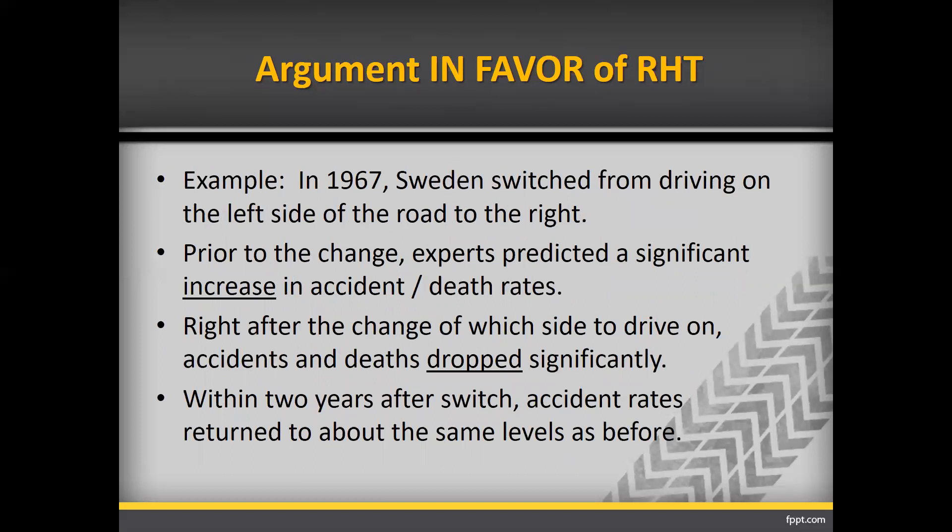The hallmark example used to promote risk homeostasis theory was in 1967 when Sweden switched from driving on the left side of the road to the right side. Prior to the change, experts predicted a significant increase in accident and death rates because drivers would be unfamiliar with driving on the opposite side. However, right after the change, accidents and deaths dropped significantly. Within two years after the switch, though, accident rates had returned to about the same levels as before the switch.